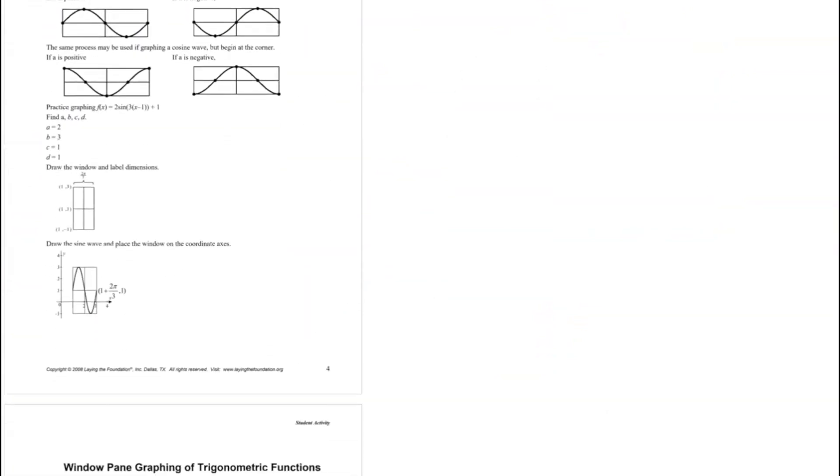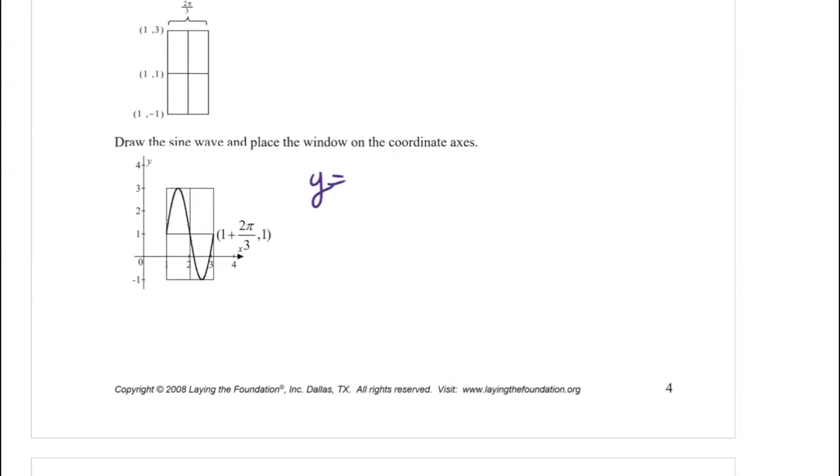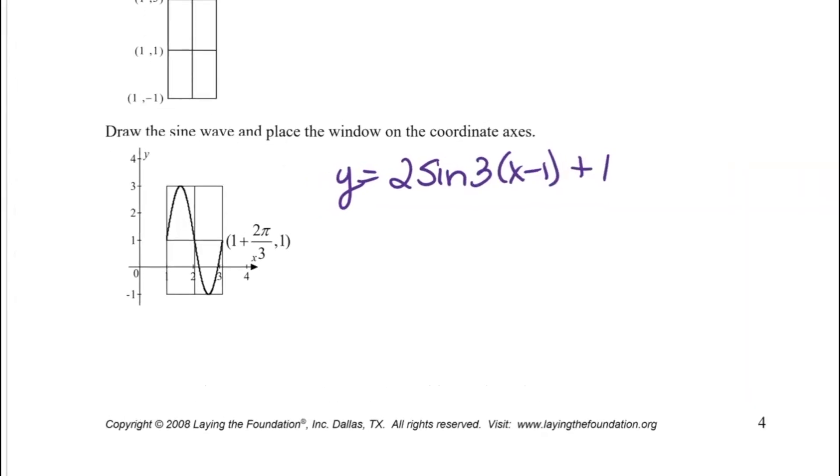I want to just show you where that is in the teacher pages. You can see this particular example has been graphed. This is that same example, y equals 2*sin(3(x - 1)) + 1. You can really get a good feel for what the stretching and the shrinking of the 2 and the 3 and all those things are doing to the curve. That's one of the nice features of a windowpane—it's a really good view. It's also a really good graphic organizer for your students to use.